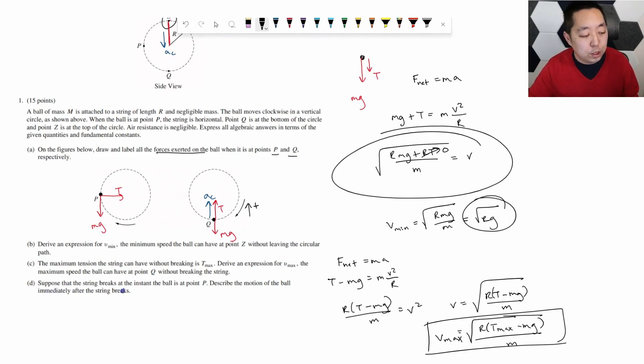Part d. Suppose the string breaks at the instant the ball is at point p. Describe the motion of the ball immediately after the string breaks. Okay, so now I break this string, and it was going upwards. So now it's upwards, and the force is downwards. That's just like it's going to go up and then come back down. There's no more centripetal acceleration. It's not going to continue the curve because there's no more force to change its direction. There's no force to cause a centripetal acceleration.